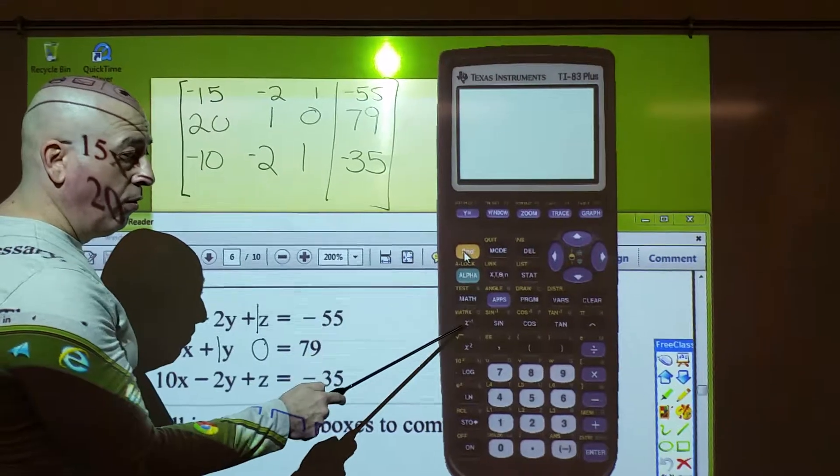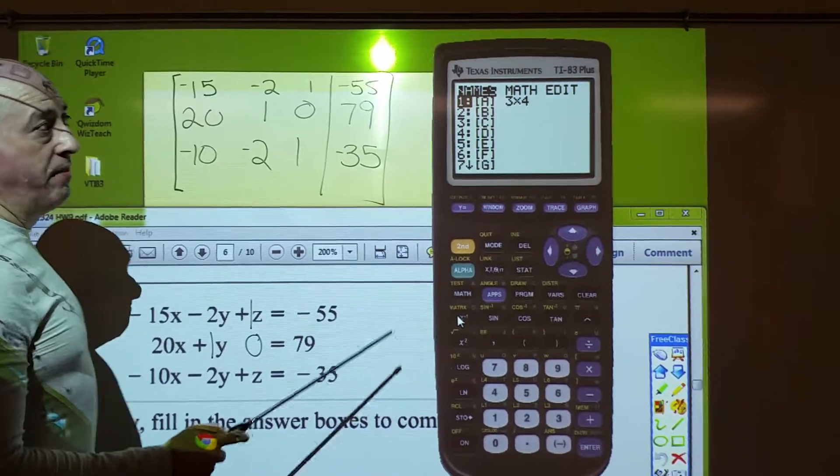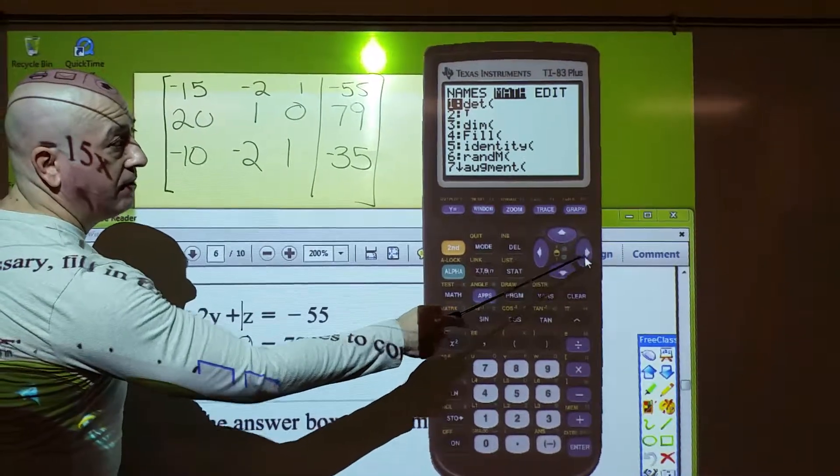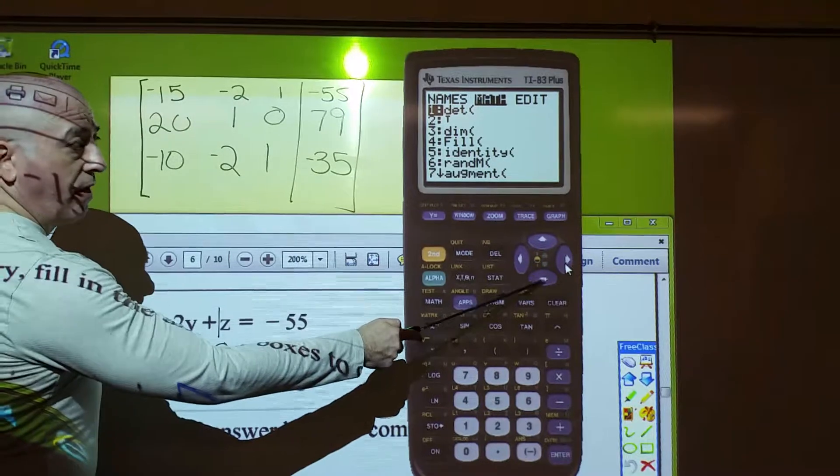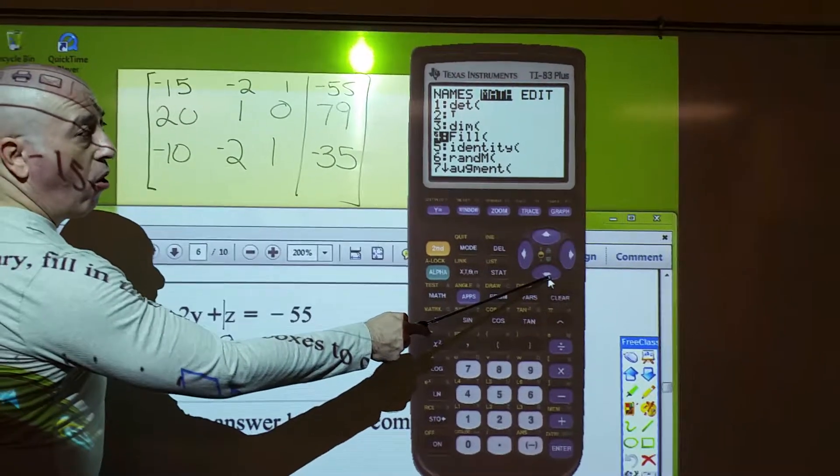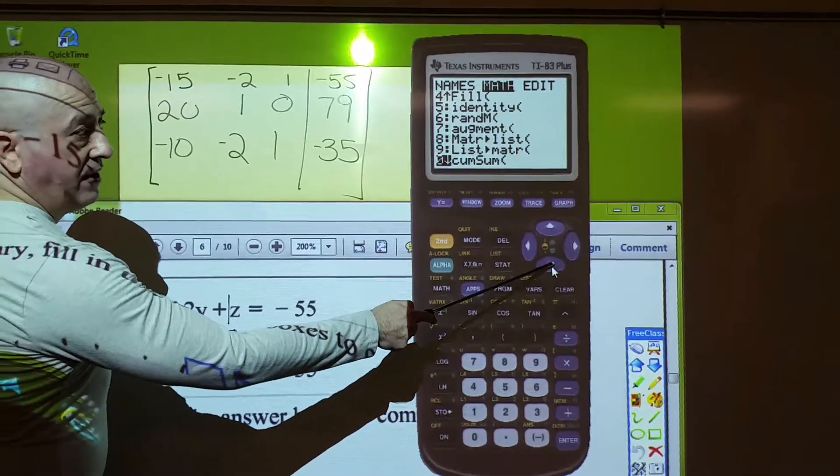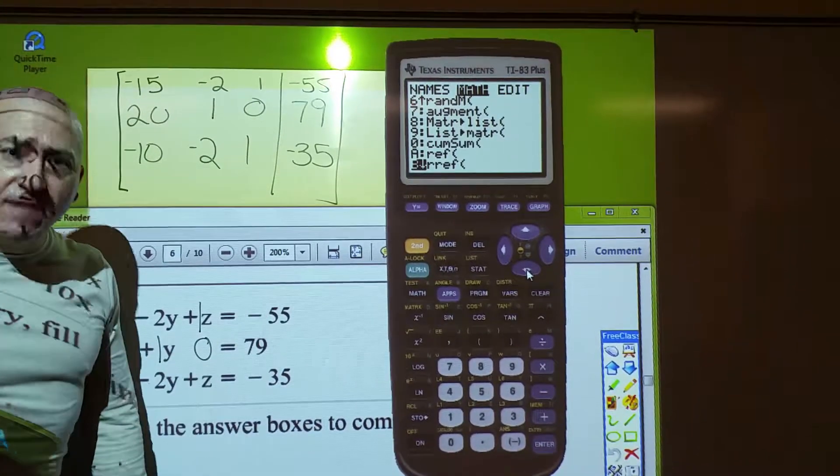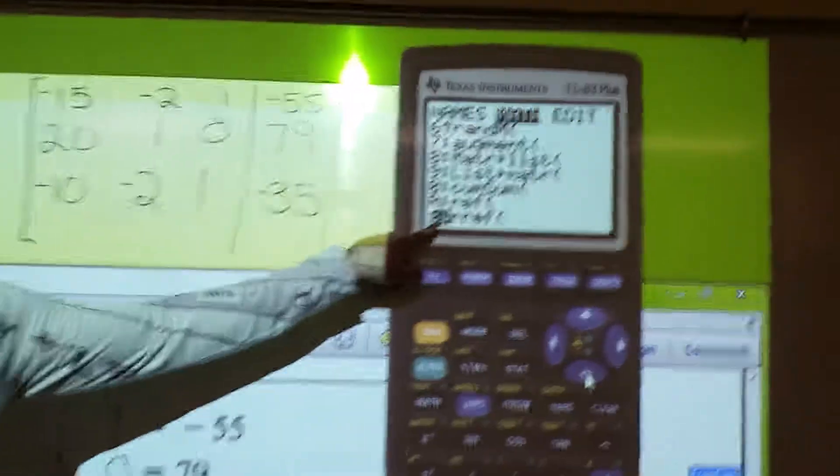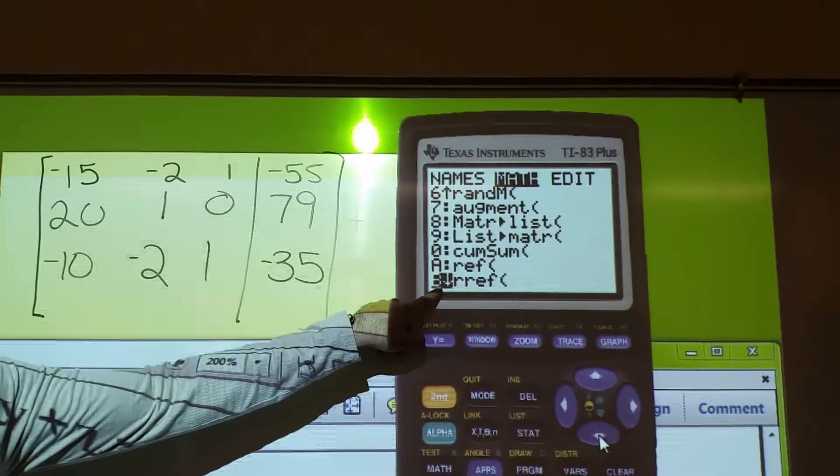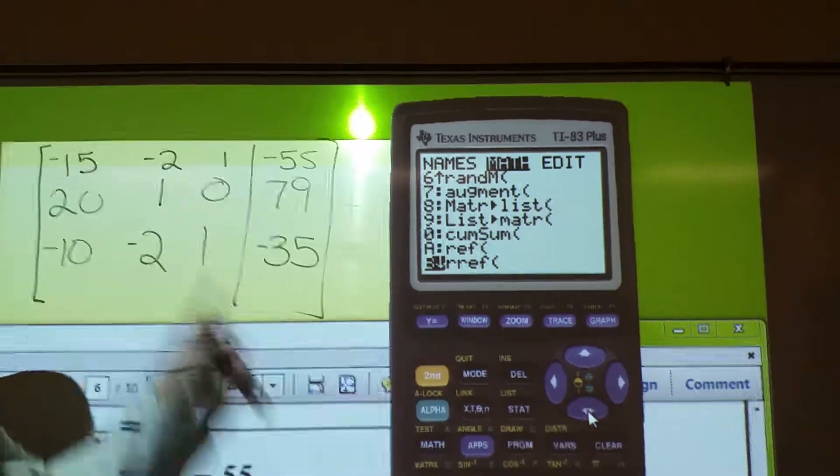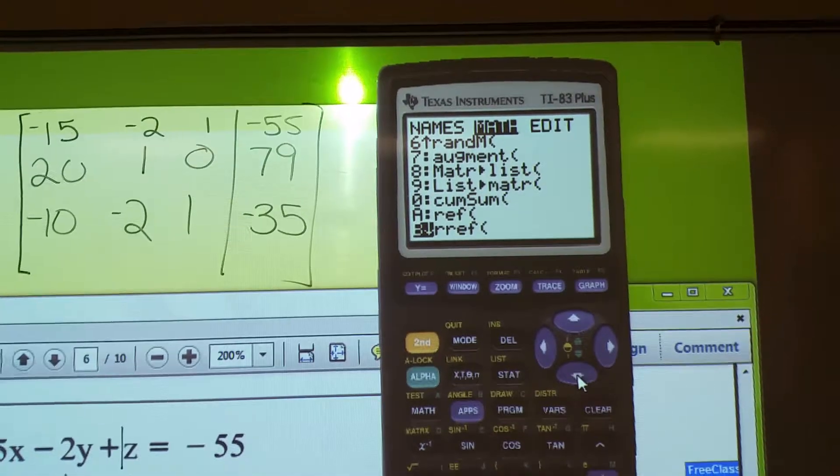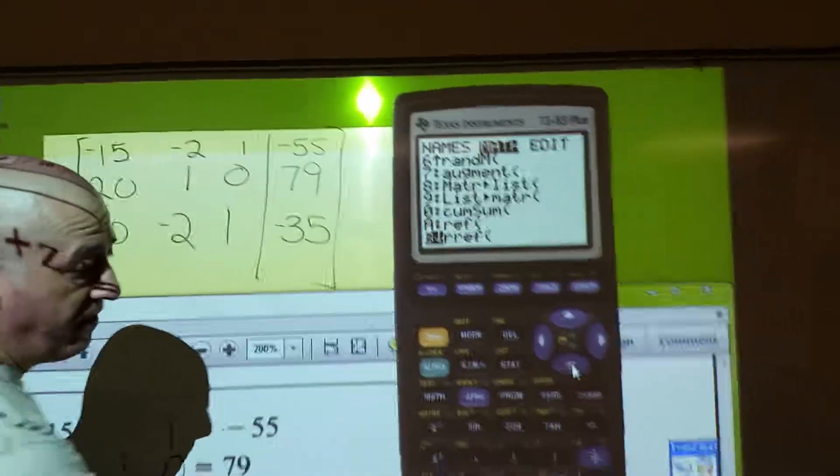And now, we want to do some math with the matrix. So you go math, move right arrow to math, and then scan down until you find R-R-E-F. That stands for reduced row echelon form. The reduced row echelon form gets you the ones down the diagonals and the zeros everywhere else. So, R-R-E-F, enter.